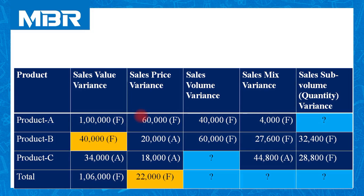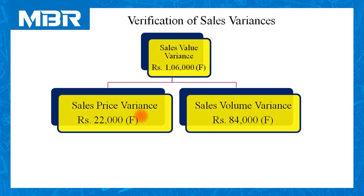For total sales price variance, the data given is: Product A — Rs. 60,000 favorable; Product B — Rs. 20,000 adverse; Product C — Rs. 18,000 adverse. Adding these: 60,000 favorable + 20,000 adverse + 18,000 adverse gives a difference of Rs. 22,000 favorable. This is written in yellow in the table. We have now completed two missing items: sales value variance for product B and total sales price variance.